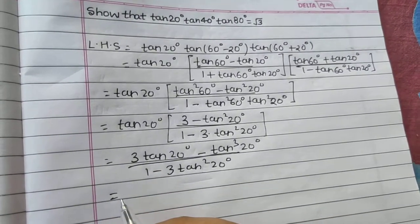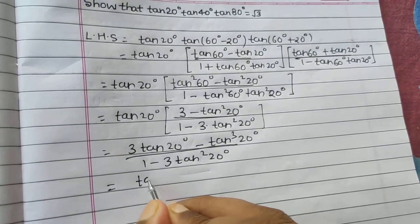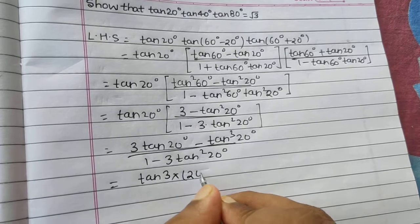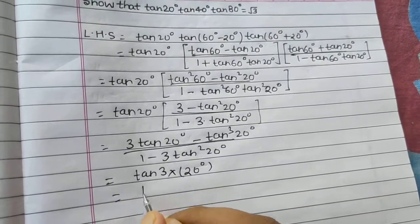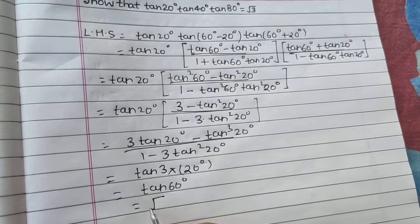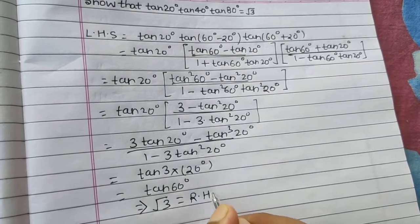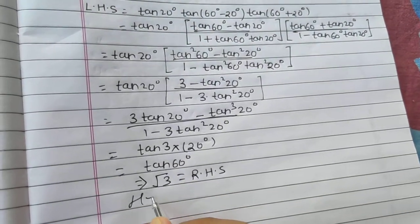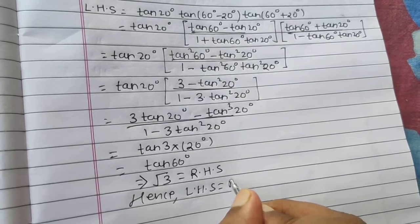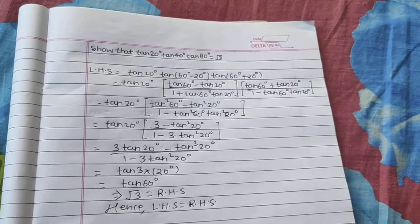That is nothing but the formula of tan3A. So tan3A with A = 20° gives tan(3×20°) = tan60°, and tan60° = √3, which is our RHS. Hence we proved LHS = RHS. This was the traditional method, where we got to the answer in multiple steps.